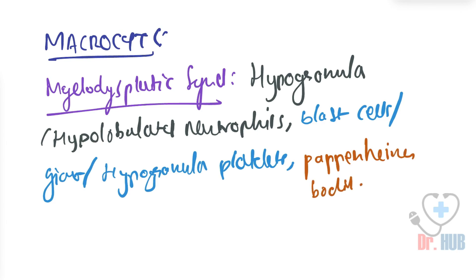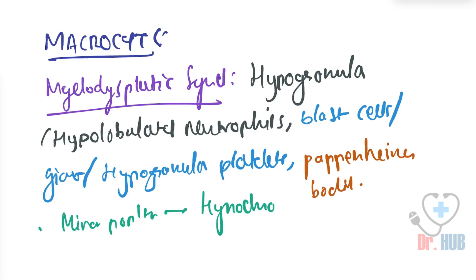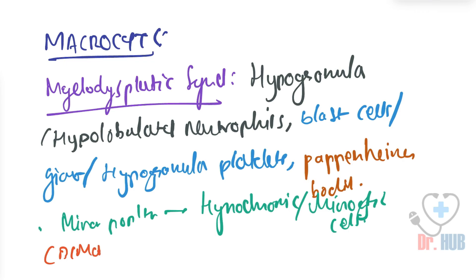In MDS there is also a minor population of hypochromic and microcytic cells, and the smear includes dimorphic red cells as well as poikilocytes.